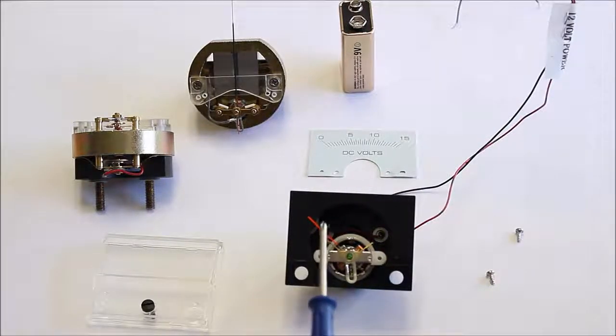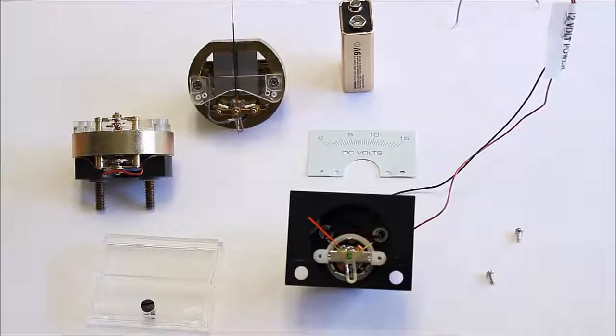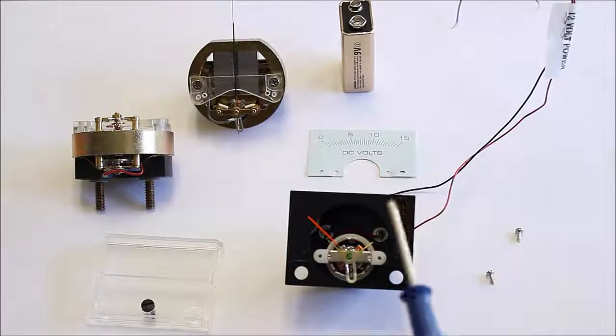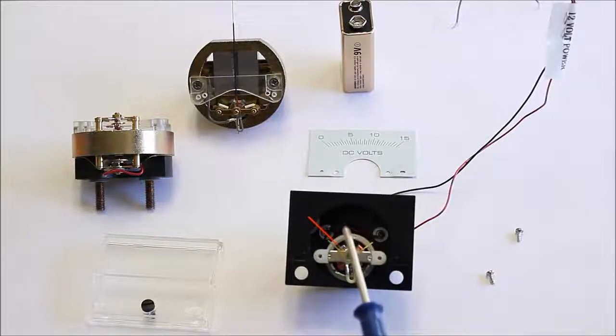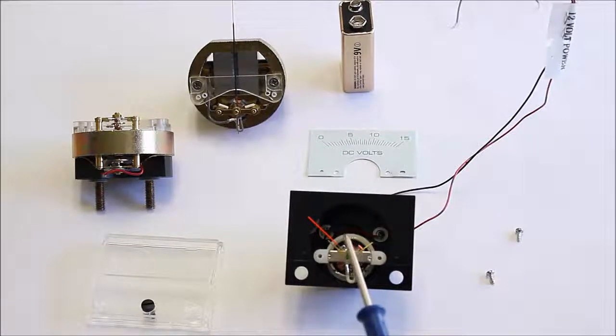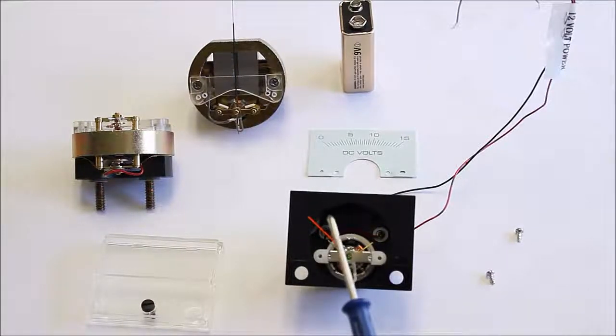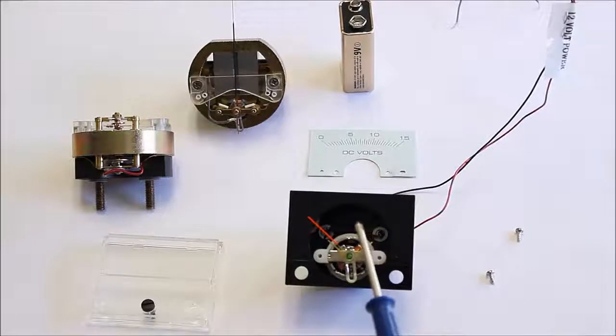So what causes this pointer to actually move, and how does it work? That's what I'm going to cover today. In simple terms, there's a moving coil located inside the magnet. So when current flows through the coil from the source being measured, a reaction occurs, and it's an electromagnetic reaction between the field and the magnet.